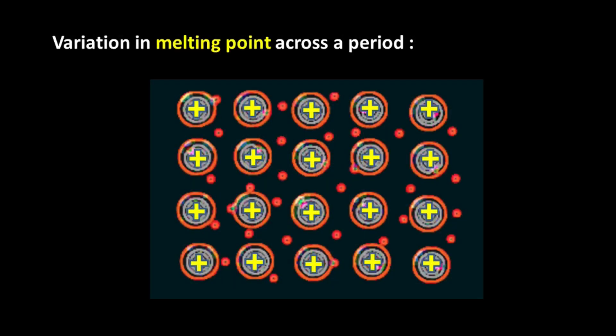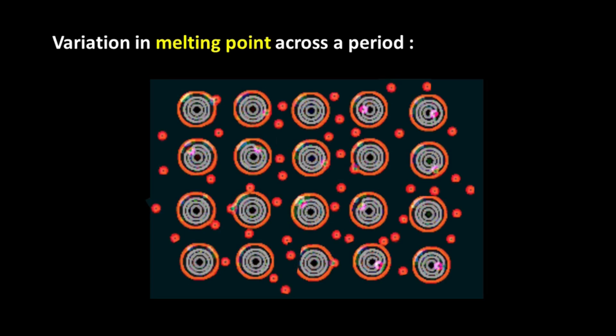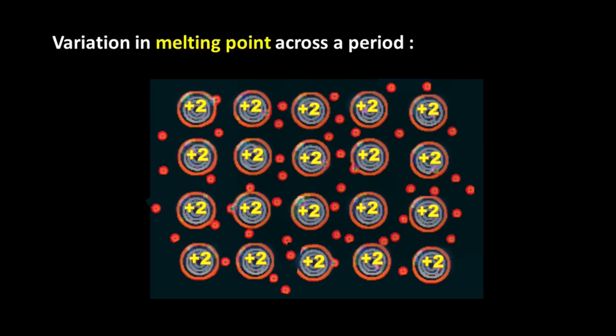So the sea of electron theory suggests that if a metal atom has more number of valence electrons, then the metal grid will be more positively charged and therefore there will be a greater attraction between the sea of electrons and the metal grid. So the metal lattice will be stronger. The sea of electrons will be able to hold the metal lattice much more tightly.